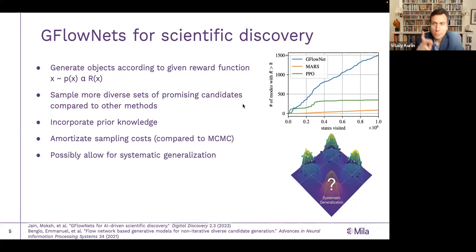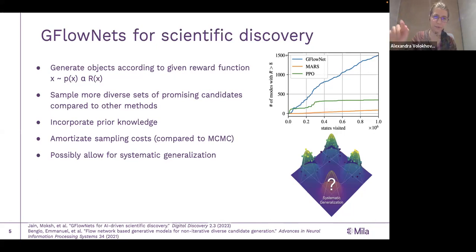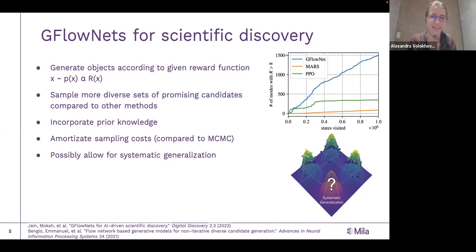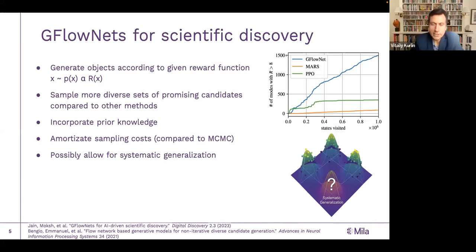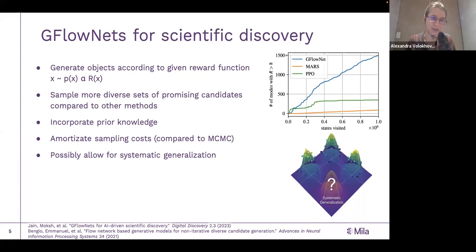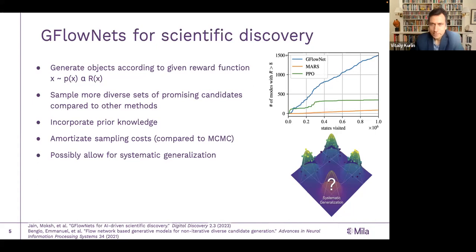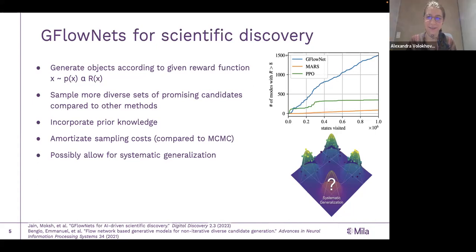An audience member asked whether the state space for crystals could be described briefly. The speaker clarified that for this specific work, that will be covered in upcoming slides, and invited anyone familiar with GFlowNets to proceed faster. In response to a follow-up question about whether the crystal sampling space is discrete or continuous, the speaker confirmed it will be a mixture — some parameters will be discrete and some parameters will be continuous.